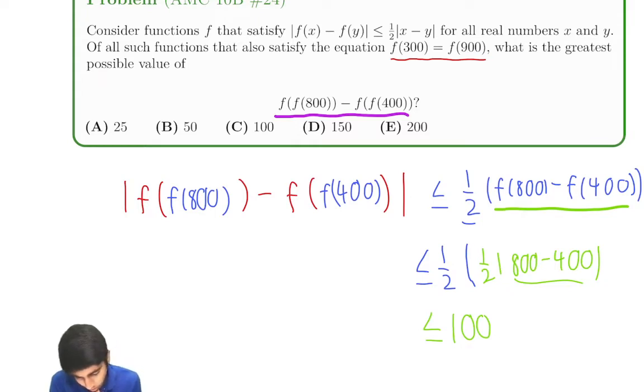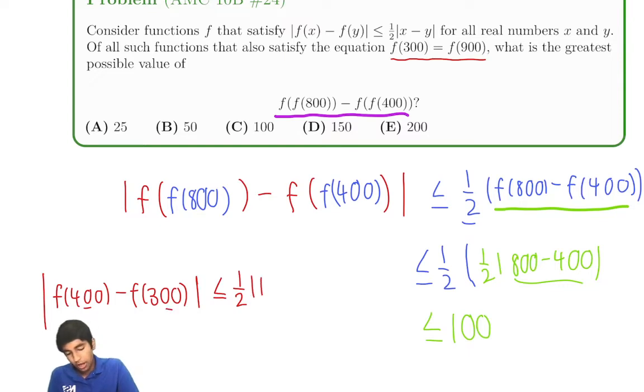Oh, but we know that f(300) and f(400) are going to be pretty close, right? Because of this condition. That condition tells us that f(400) minus f(300), the absolute value of that is less than or equal to 1/2 times x minus y, 100, which is 50.